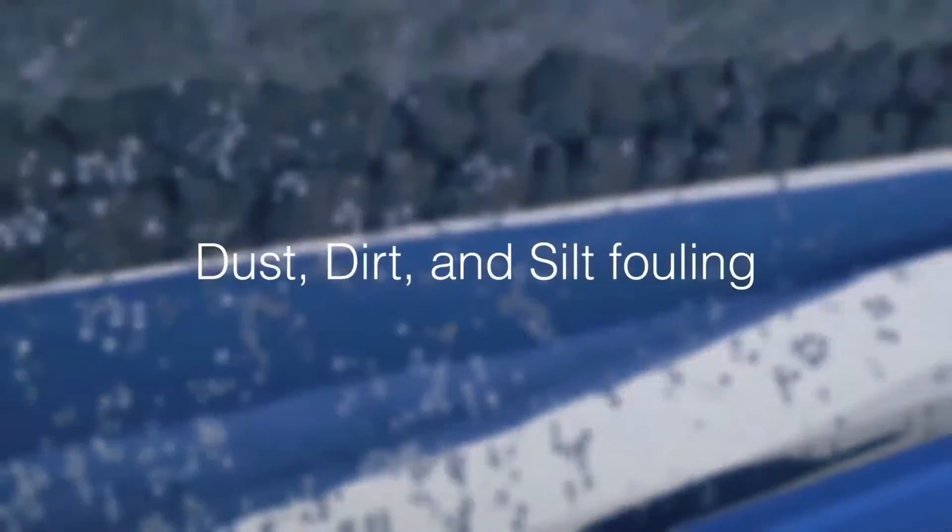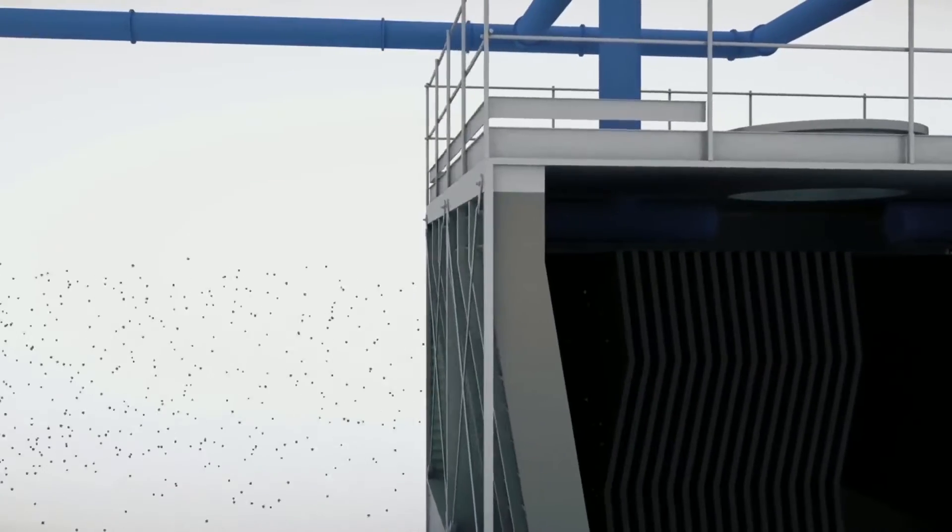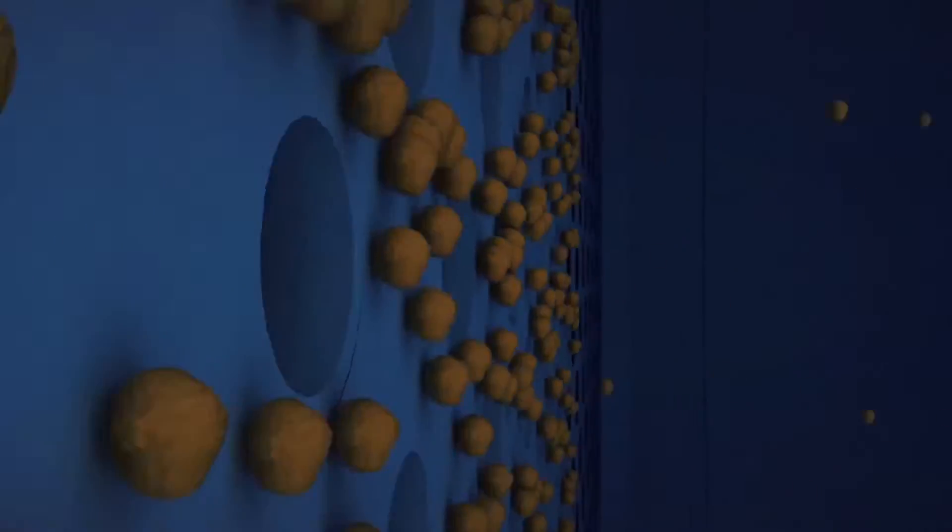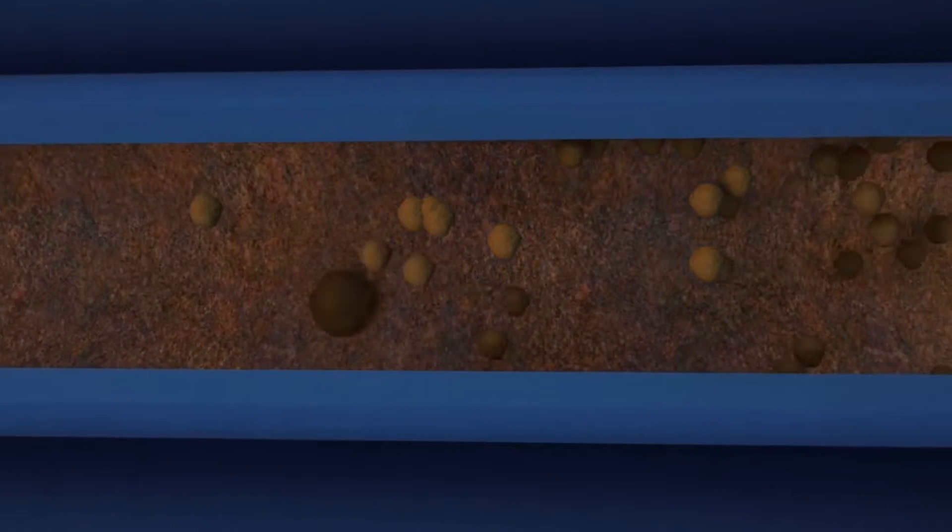Dust, dirt, and silt fouling. Cooling towers inevitably end up attracting dirt and dust from the surrounding air that settles through the system into the cooling tubes, creating an insulation layer.